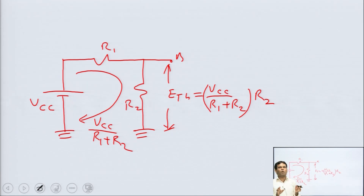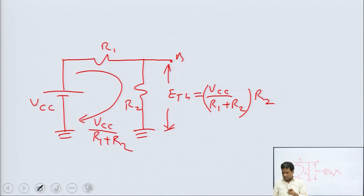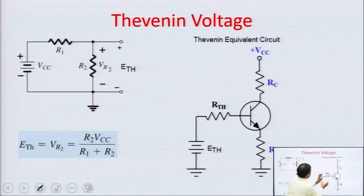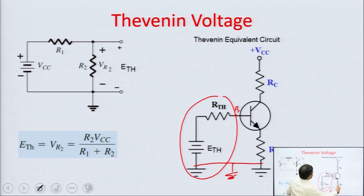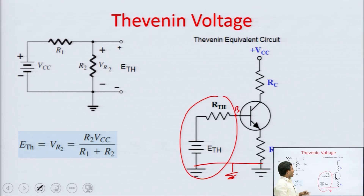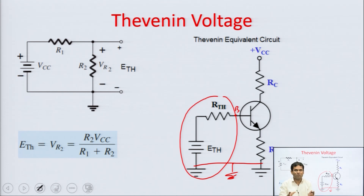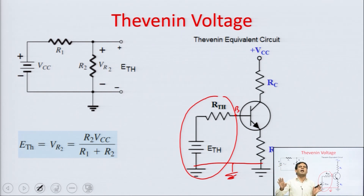Now we have calculated RTH and VTH. After calculating these we design the Thevenin equivalent circuit. This was the load terminal — base and ground. We had removed the load terminal, obtained the Thevenin equivalent circuit, and now we reconnect the load terminal. This circuit becomes simple, with no division of current, so we can easily write the input KVL equation and output KVL equation.